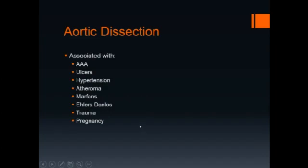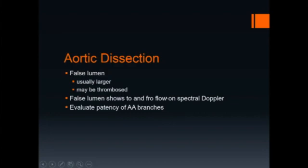Aortic dissection is associated with abdominal aortic aneurysms, ulcers, hypertension, atheroma, Marfan syndrome, Ehlers-Danlos, trauma, and pregnancy. In aortic dissection, the false lumen is usually larger and may be thrombosed. The false lumen shows to and fro flow on spectral Doppler. It is important when evaluating dissections to evaluate the patency of the branches of the abdominal aorta, because the dissection can result in obstruction of these branches.